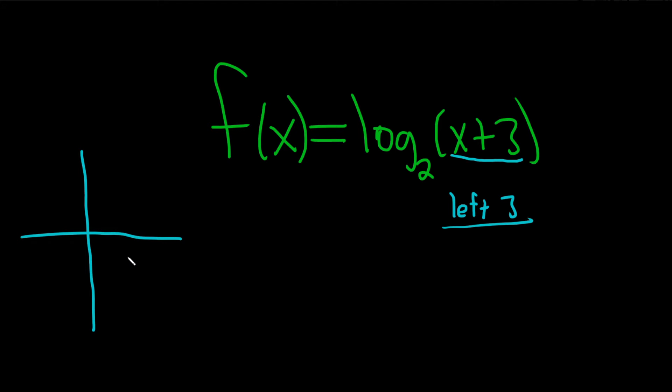So let's graph log base 2 of x. So that has a vertical asymptote at x equals 0 like this.